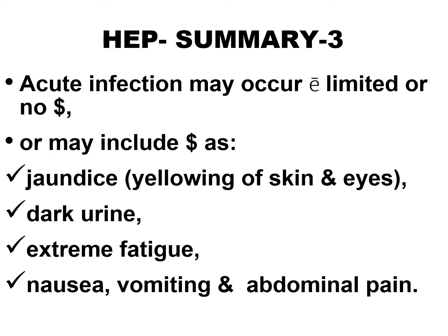Still in the summary: acute infection may occur with limited or no symptoms, or may include symptoms such as jaundice — yellowing of skin and eyes — dark urine, extreme fatigue, nausea, vomiting, and abdominal pain.